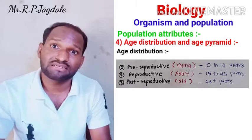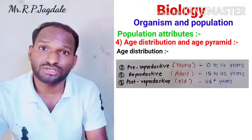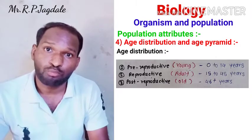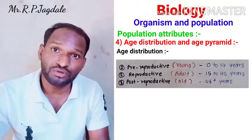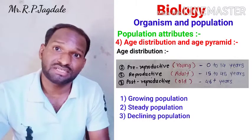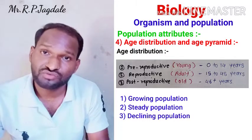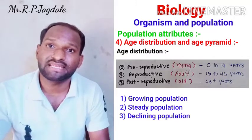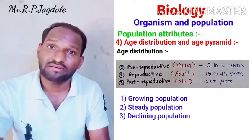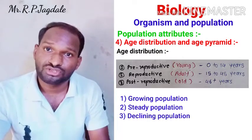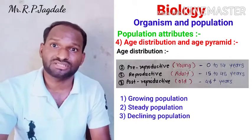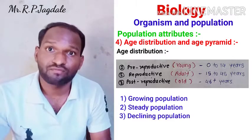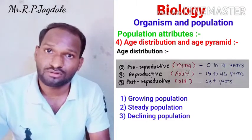By age distribution we can conclude whether a certain population is increasing, decreasing, or remaining steady. Based on age distribution, population is of three types: first is growing population, second is steady population, and third is declining population. To understand which type of population exists, we should know the age distribution across the three life stages.